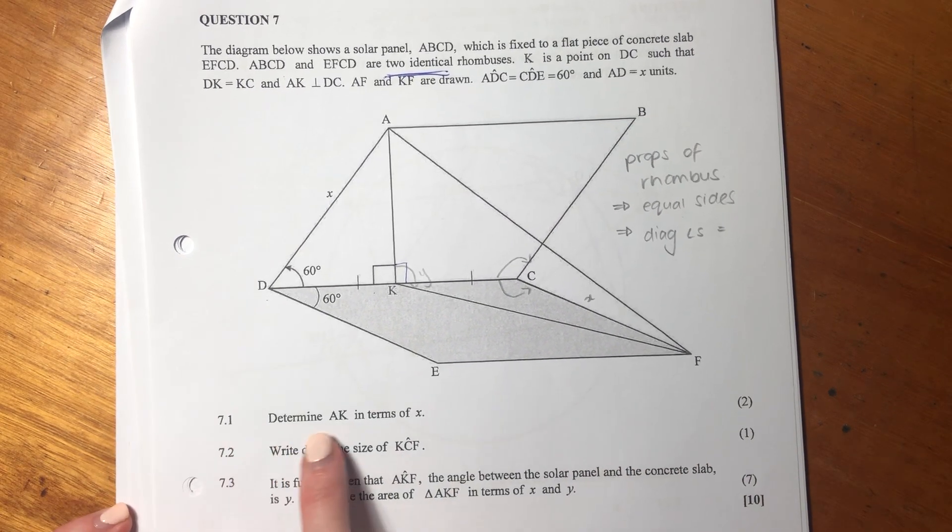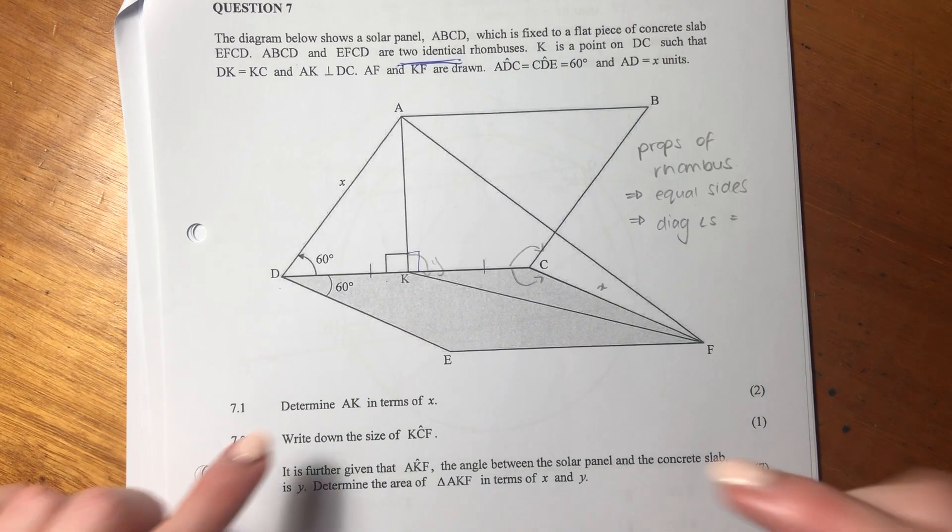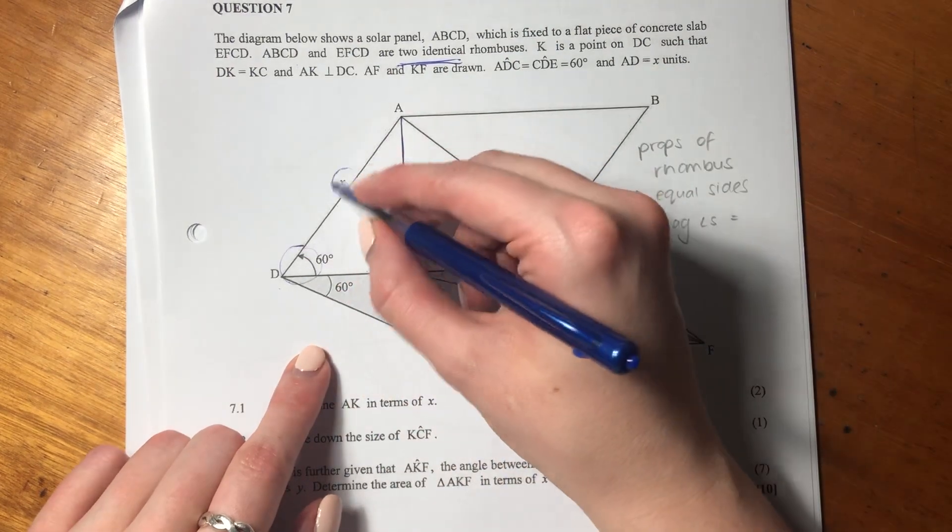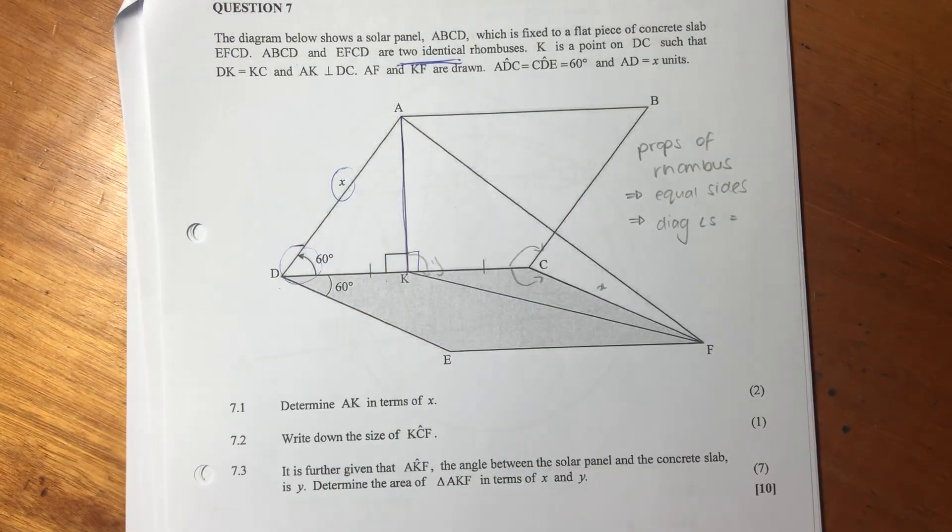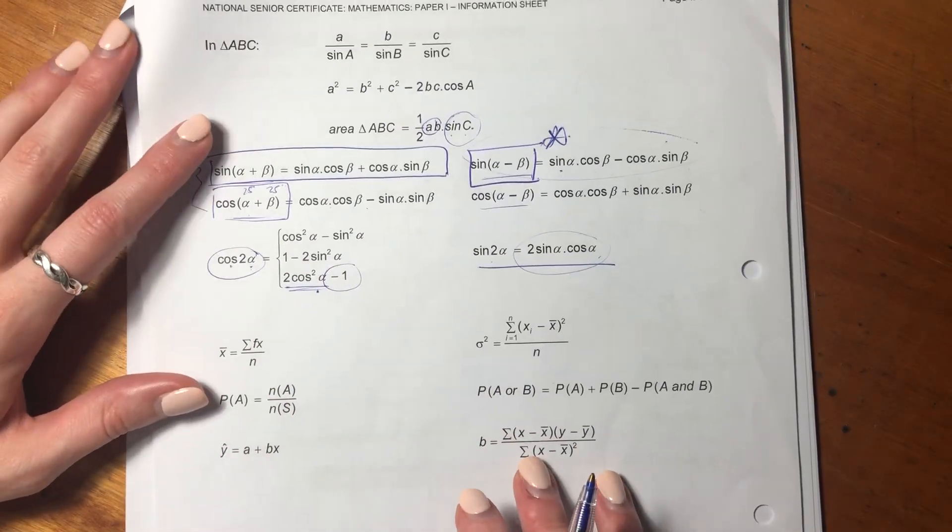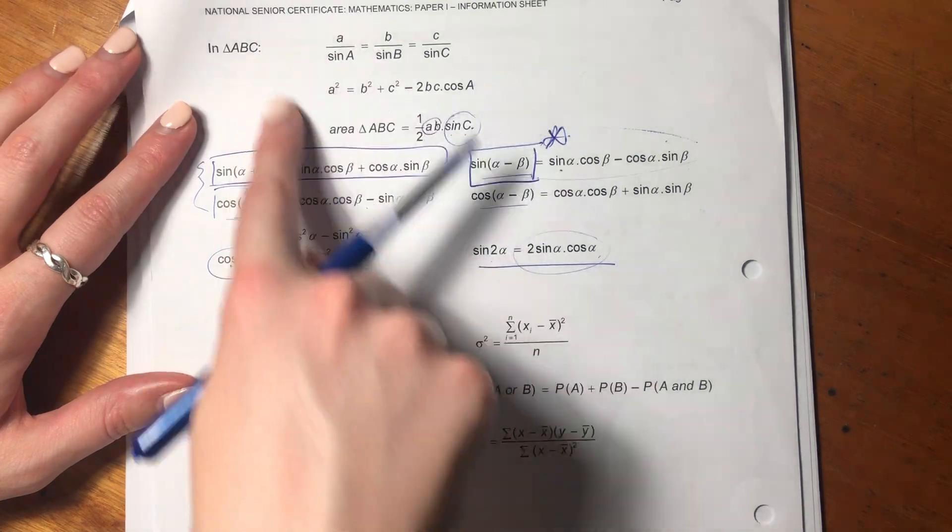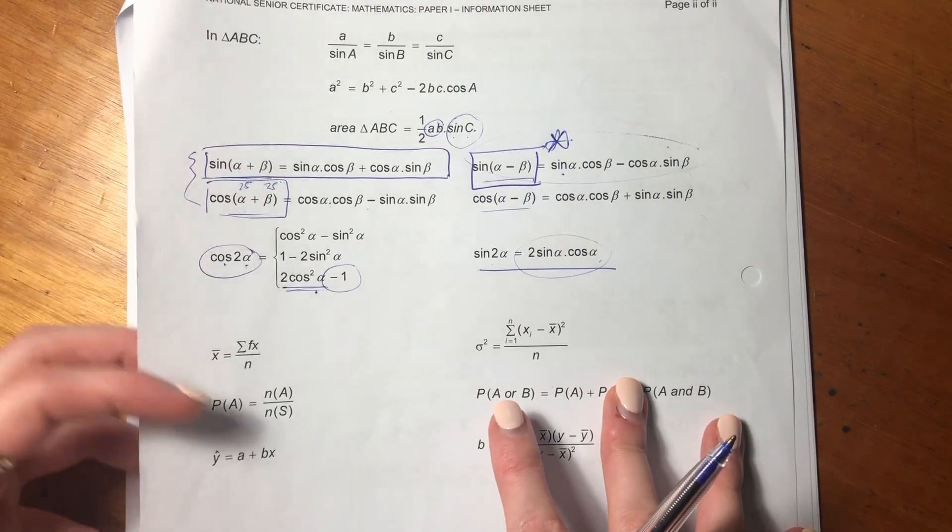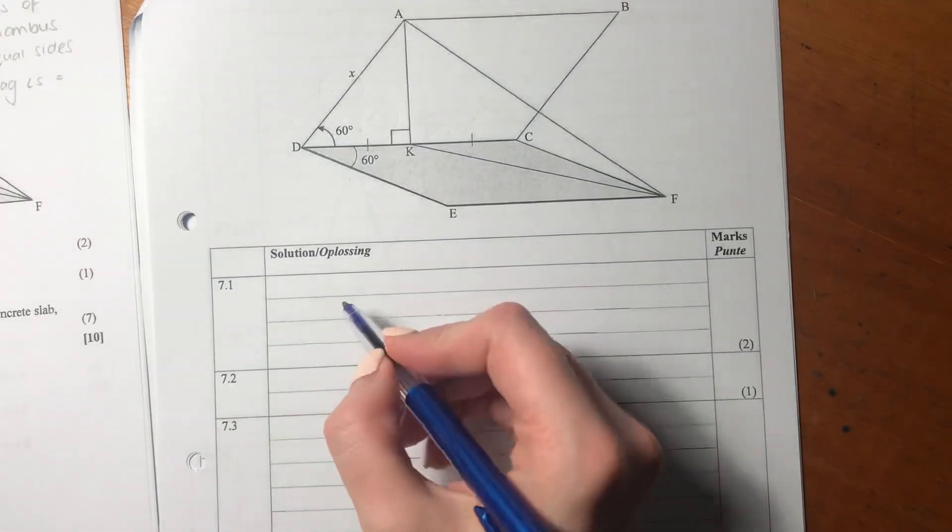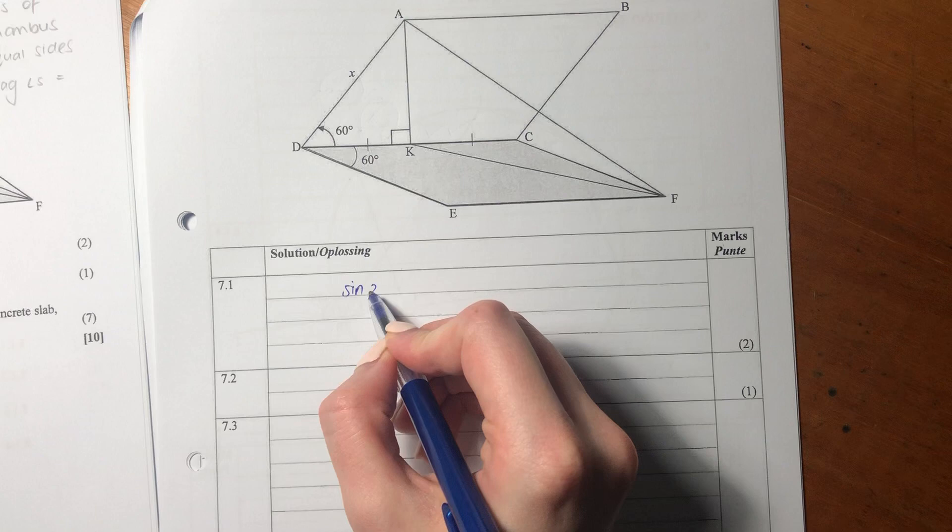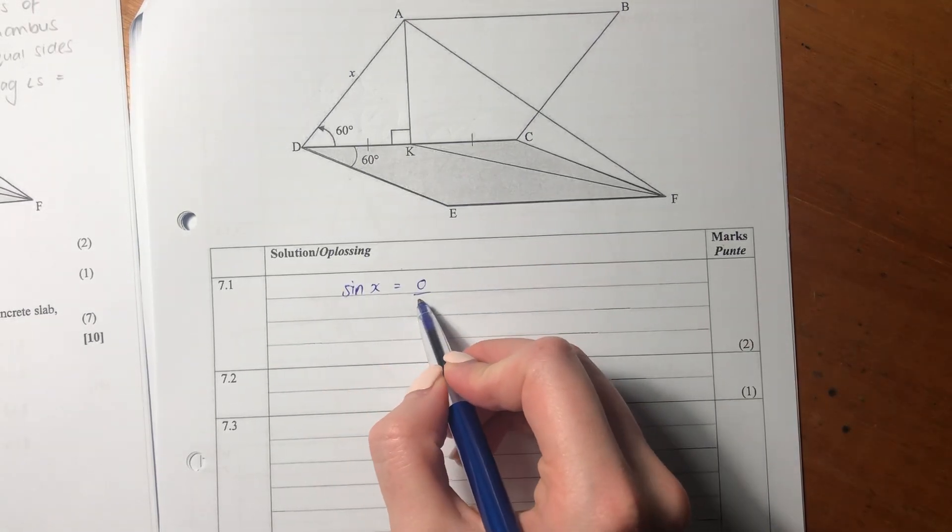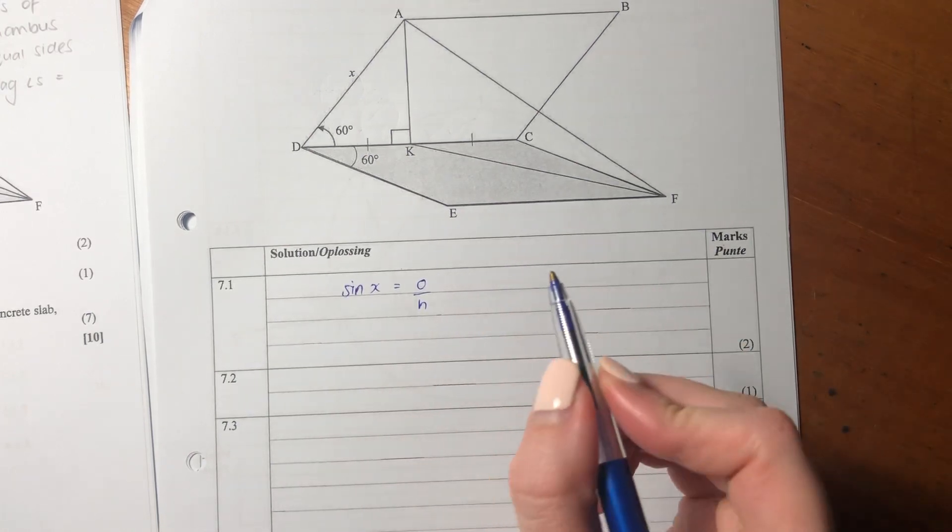7.1 says determine AK in terms of X. AK is this one here. We have an angle and we have a side. Let's go to our formula sheet and see if we can find anything there. Let's remember what sine equals - sine X equals opposite over hypotenuse from SOHCAHTOA.